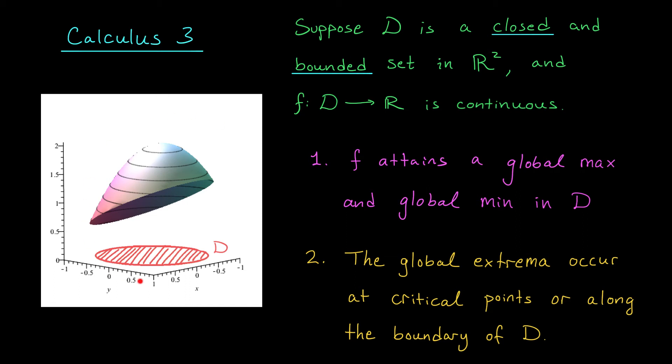You can see in this picture my global maximum is going to be at this point here, which is a critical point in my region, and the global minimum is going to occur at this point here, a point along the boundary.